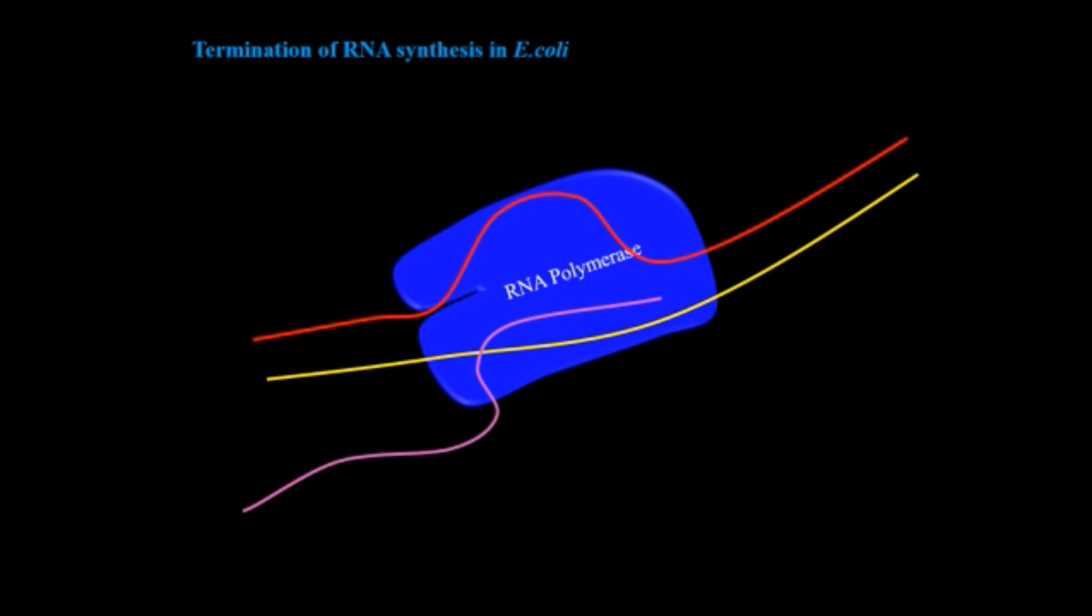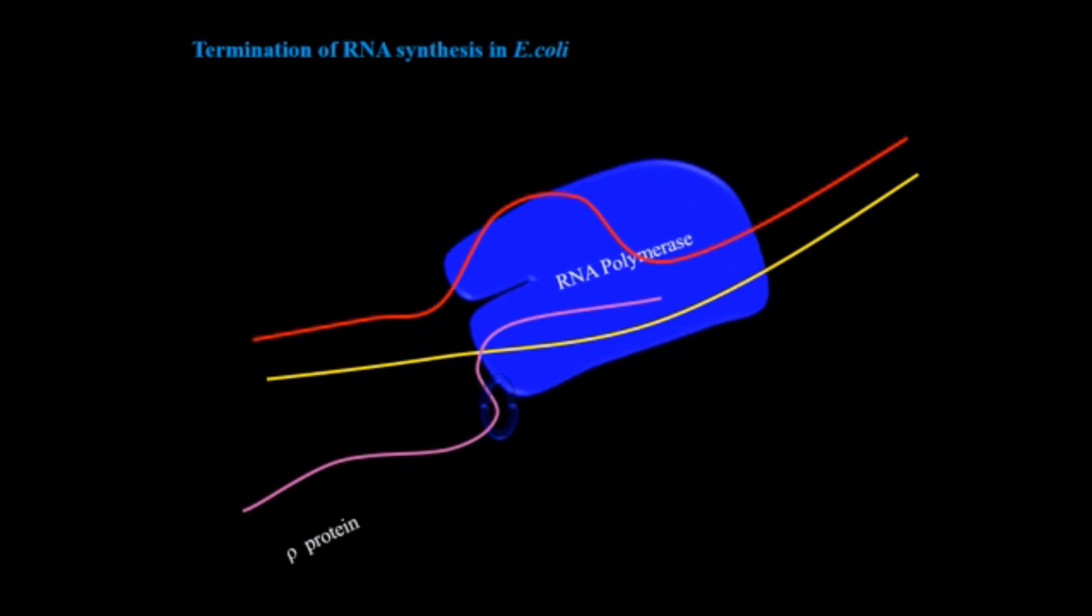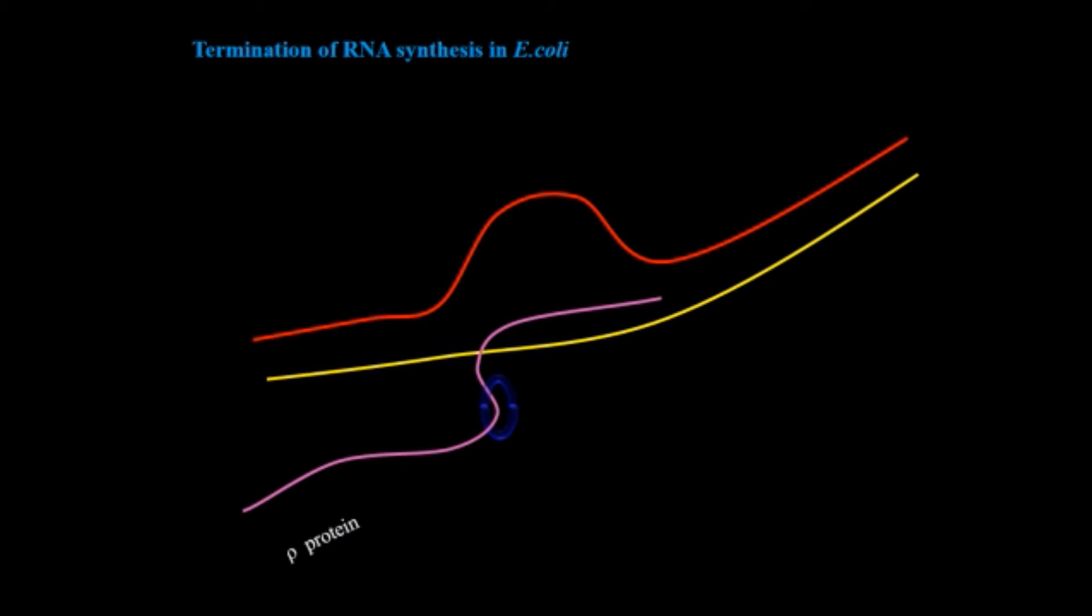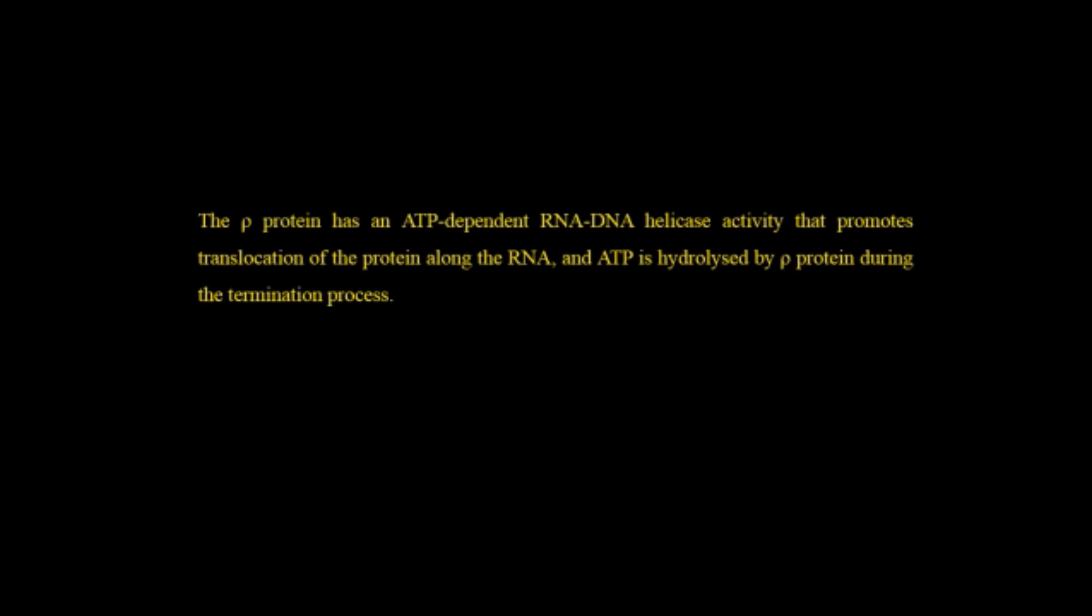In the case of Rho-dependent termination, there is the Rho protein which also travels along with the transcript until it reaches and interacts with the RNA polymerase. RNA polymerase is now at the site of termination. As it interacts with the RNA polymerase, it leads it to bypass and this way the termination takes place in E. coli and also in other prokaryotes. The Rho protein has an ATP-dependent RNA-DNA helicase activity that promotes translocation of the protein along the RNA, and ATP is hydrolyzed by Rho protein during the termination process.